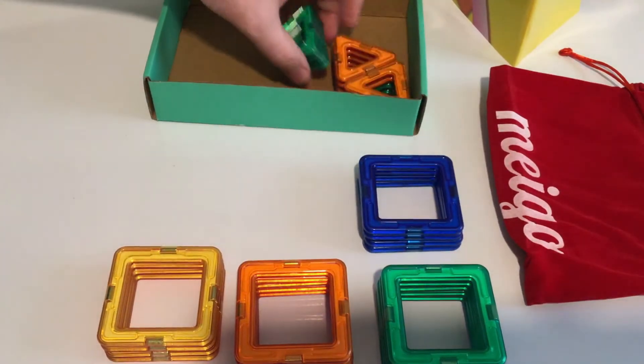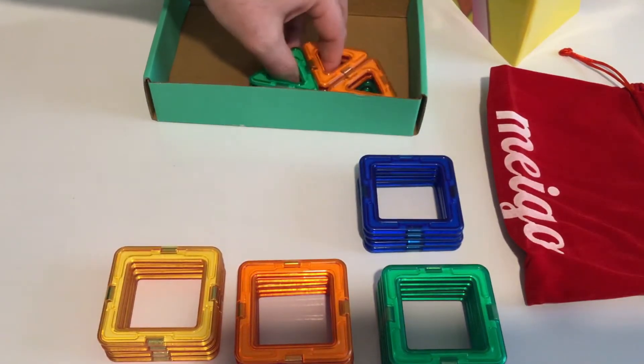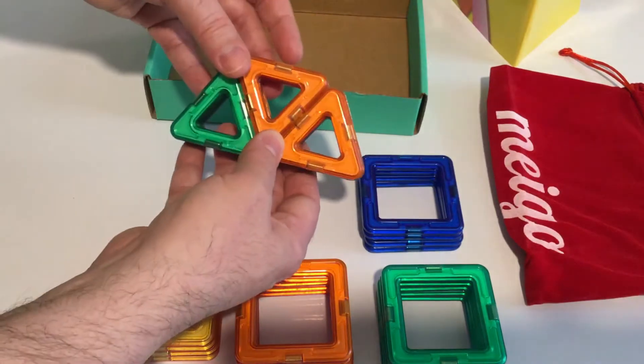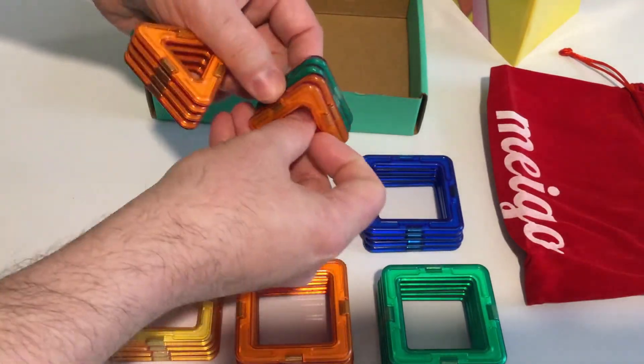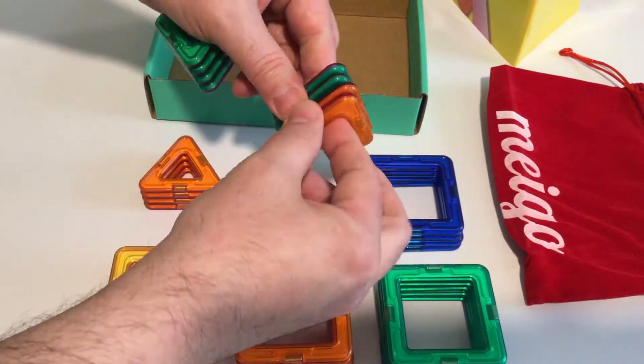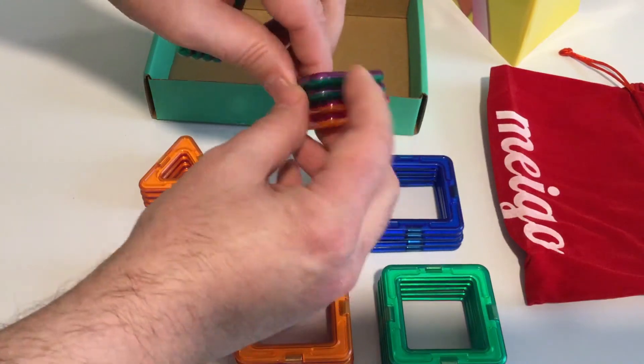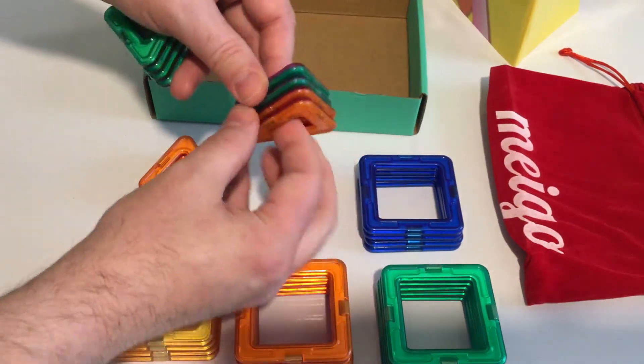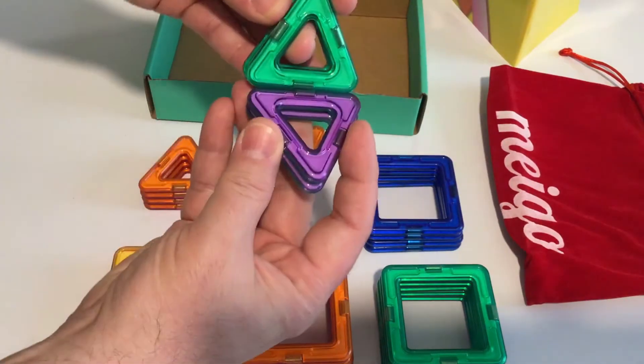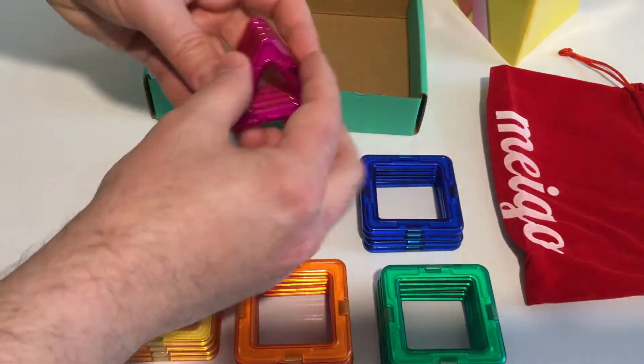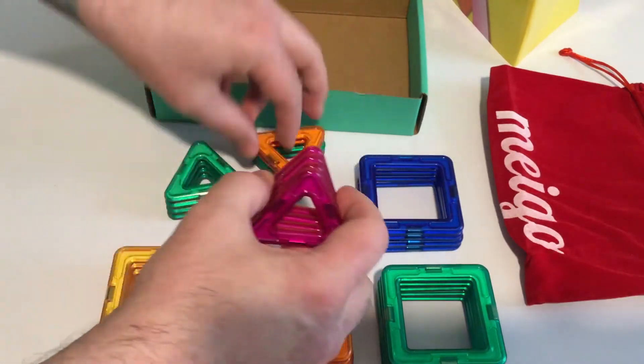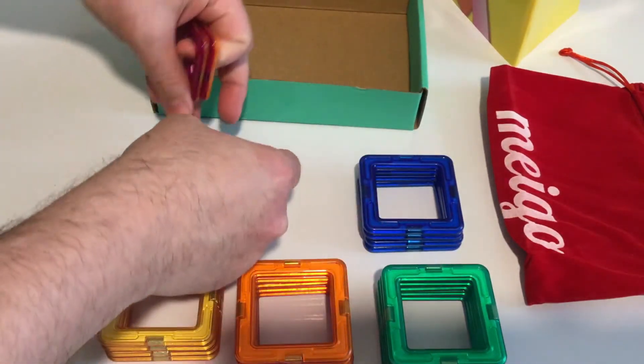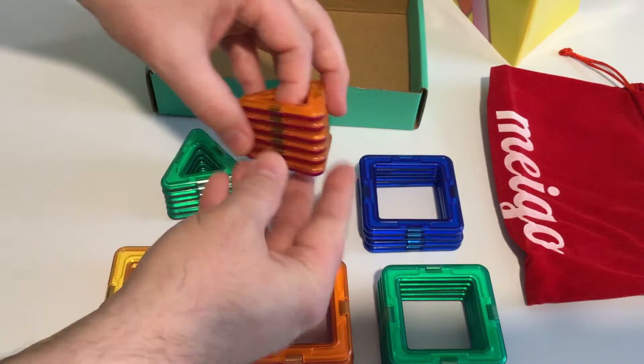Now we've got some triangle shaped pieces as well. There's going to be a total of 12 of those. You can see there are different colors there as well: purple and green and yellow, orangish reddish. And they stick in a similar fashion as the square ones with that magnet on the edges. Let's put them together there with the right colors.